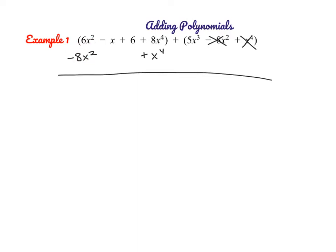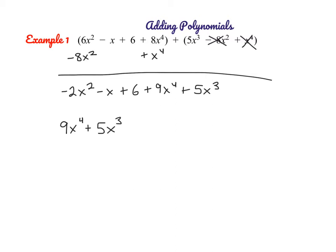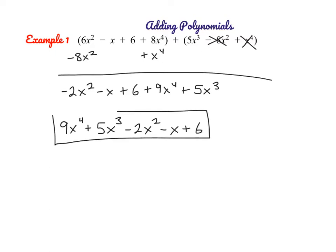Here we start combining like terms. If we have 6x squared minus 8x squared, it gives us negative 2x squared. Remember, when we're adding or subtracting, only the coefficient changes. This term stays the same; the constant 6 stays the same. Here we have 8 plus 1, so that gives us 9x to the 4th. And then we still have that 5x cubed. Now we want to write our answer in standard form — descending order. So we have 9x to the 4th plus 5x cubed minus 2x squared minus x plus 6.